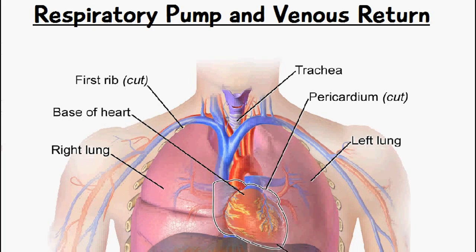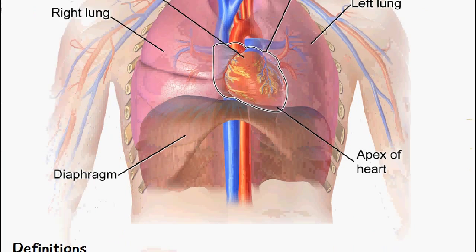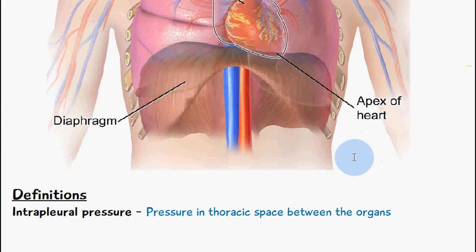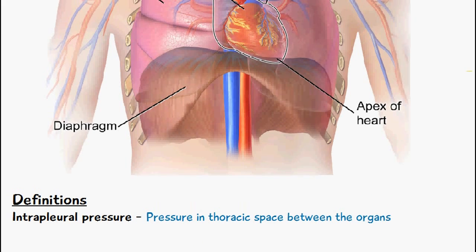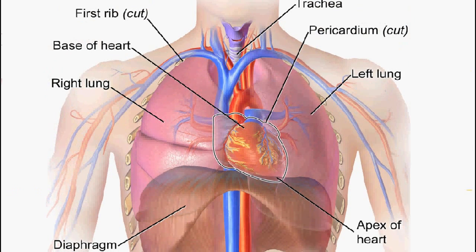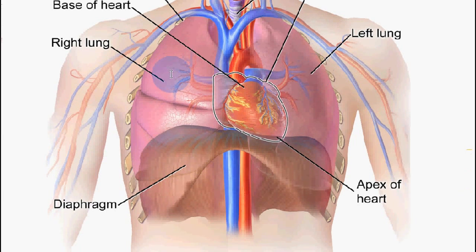Before we begin I want to direct your attention to the following definition: intrapleural pressure. This is the pressure in the thoracic space between the organs. We have an image here of the thoracic cavity — you can see lungs, heart, and various vessels. The intrapleural pressure is going to be the pressure which is in between these vital organs.